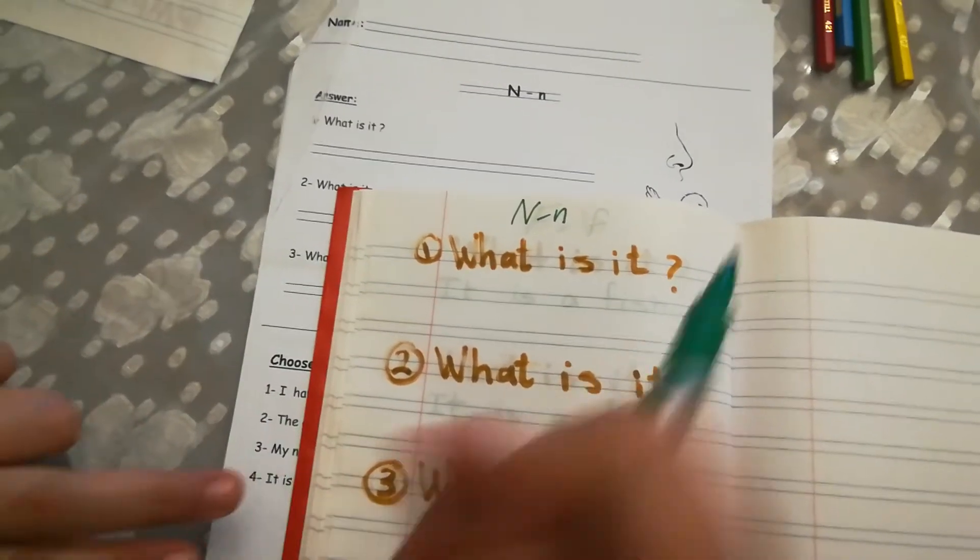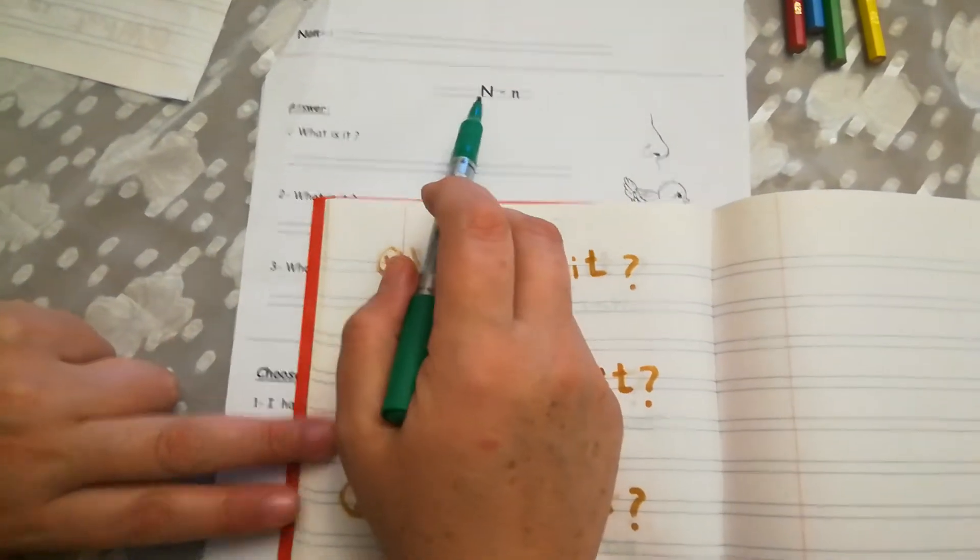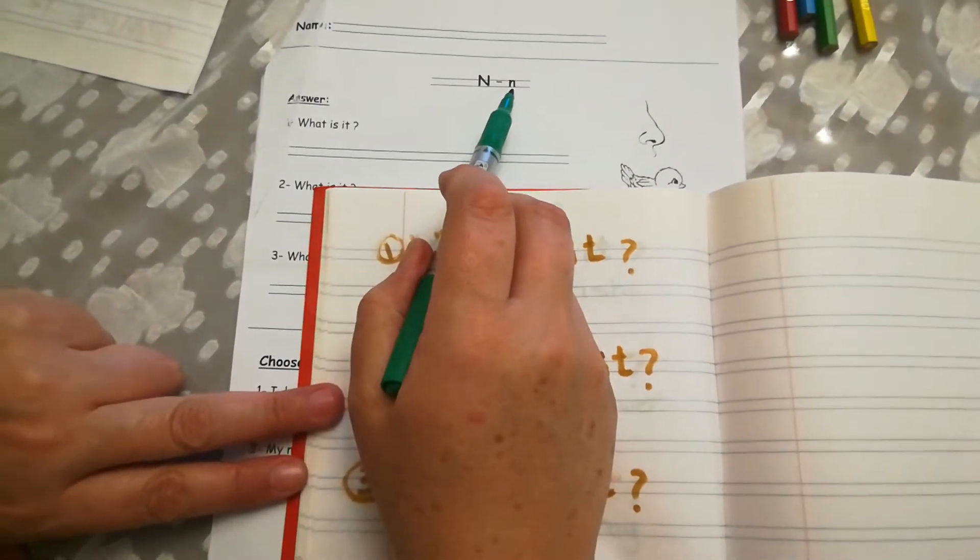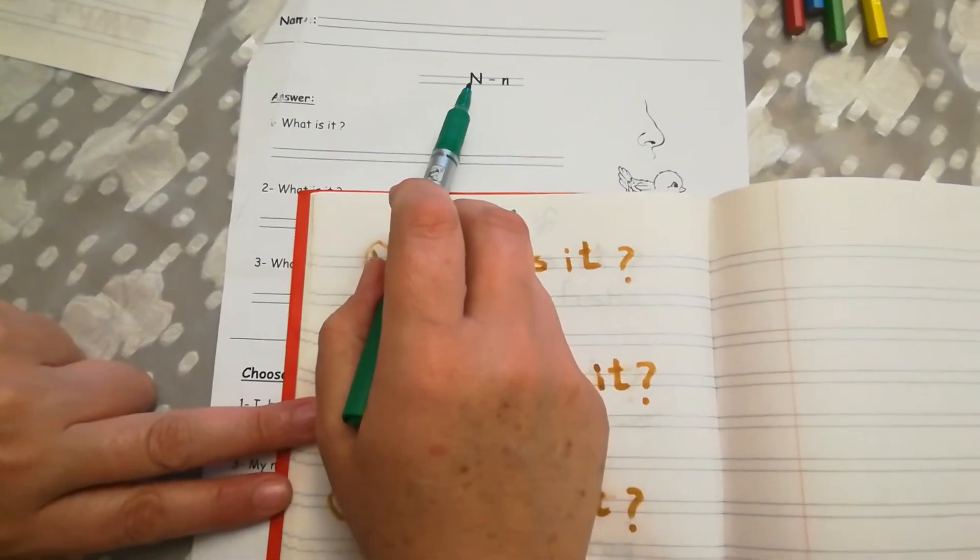Good morning, KG2. Our letter today is letter N. Capital N, small n. Sound of letter N, na, na.